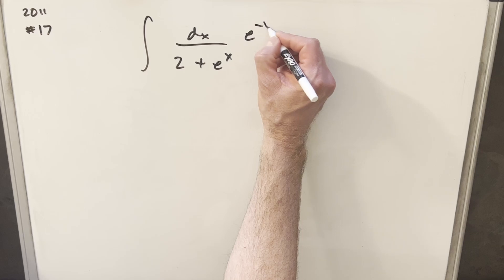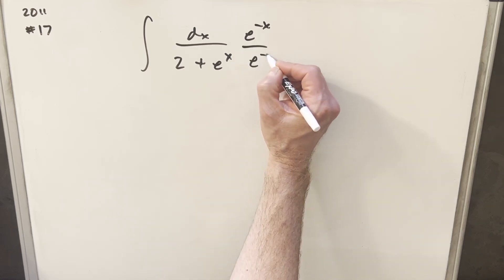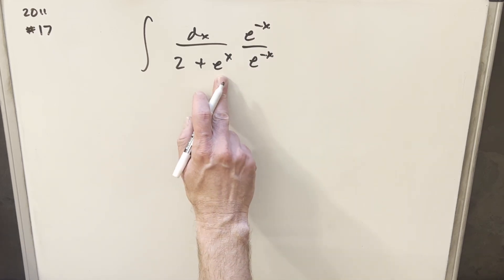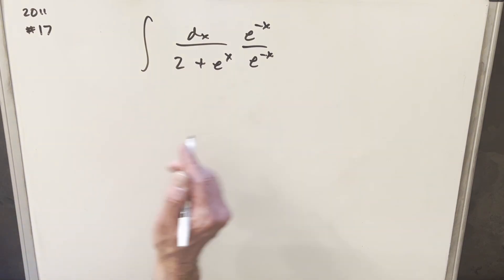if I just multiply, instead of e^x, I'm going to multiply by e^(-x). The reason I do that is that's going to cancel here. So let's just see what happens when we multiply this out.